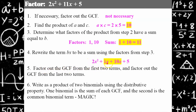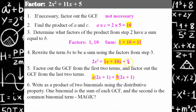Step five: consider the first two terms and factor out the GCF. The greatest common factor between 2x squared and 1x is x, giving x times 2x plus 1. Then for 10x plus 5, the greatest common factor is 5, giving 5 times 2x plus 1. Notice these binomials are the same — that's the magic. We take our GCF from each as one binomial, and the common binomial as the second: the factored trinomial is x plus 5 multiplied by 2x plus 1.